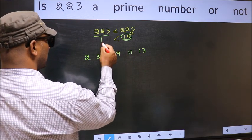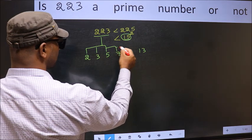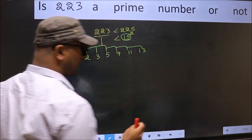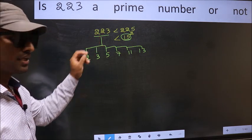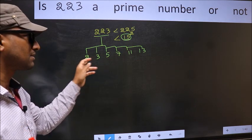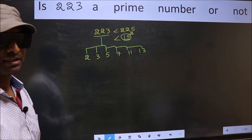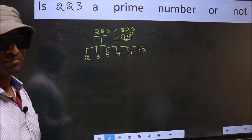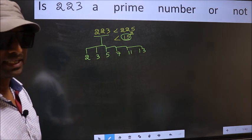Now for the given number we should check divisibility by all these numbers. And if the given number is divisible by any one of these numbers, we say it is not a prime number. Otherwise, it is a prime number. Understood the method? Now let us check with the divisibility.